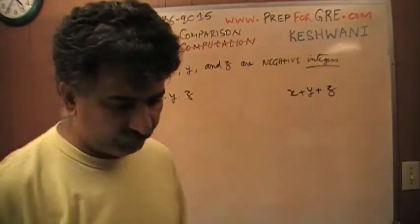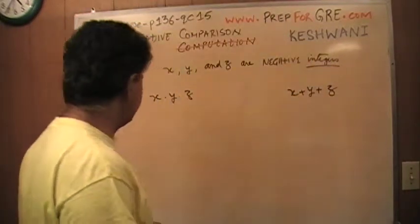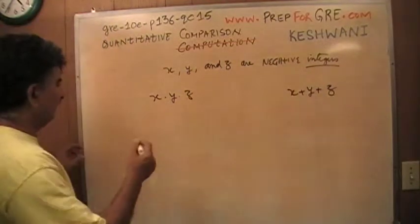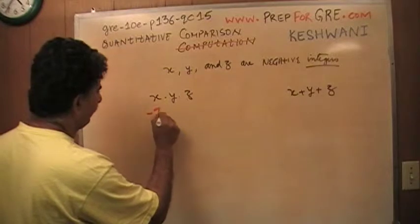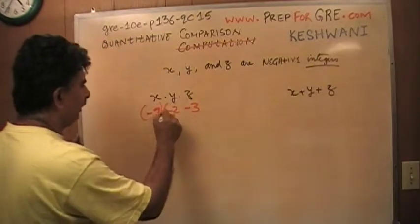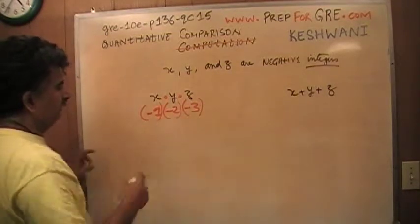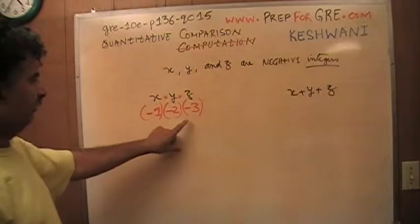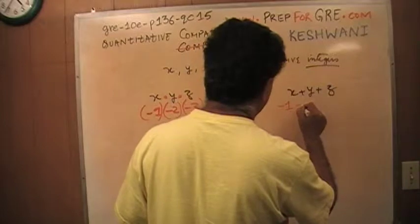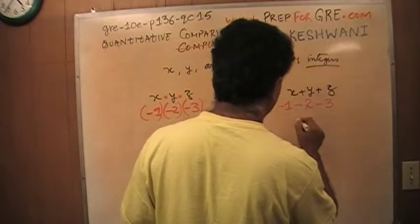The best, simplest, and quickest way to tackle this problem is to just plug in numbers. Let's start with negative 1, negative 2, and negative 3. Negative 1 times negative 2 times negative 3 equals negative 6. And negative 1 plus negative 2 plus negative 3 also equals negative 6. What do you know?